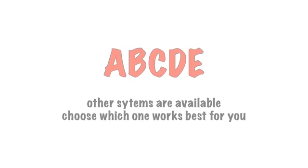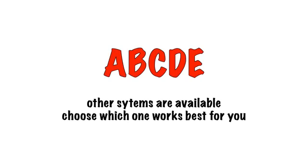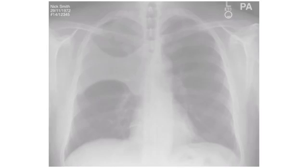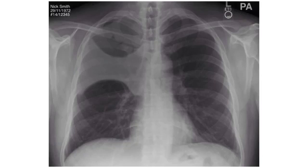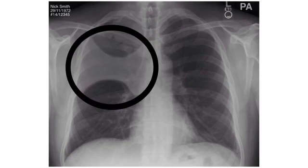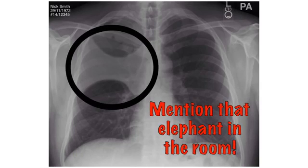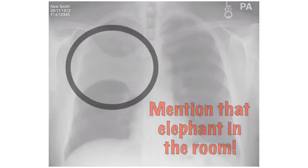We'll be using the ABCDE approach to chest X-ray interpretation. If there is a clear area of abnormality, don't hesitate to highlight it first. But remember to go through systematically afterwards to check you haven't missed anything.